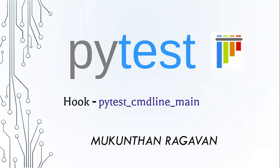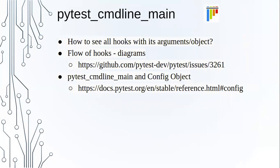Since PyTest execution starts generally from the command line, we are going to see the first hook — pytest_cmdline_main. We need to know about the different kinds of hooks and their objects. If you execute any PyTest cases you never see anything in your console about the hooks, so we need to see which hooks are executed in which sequence. We'll discuss this with a GitHub forum image as well.